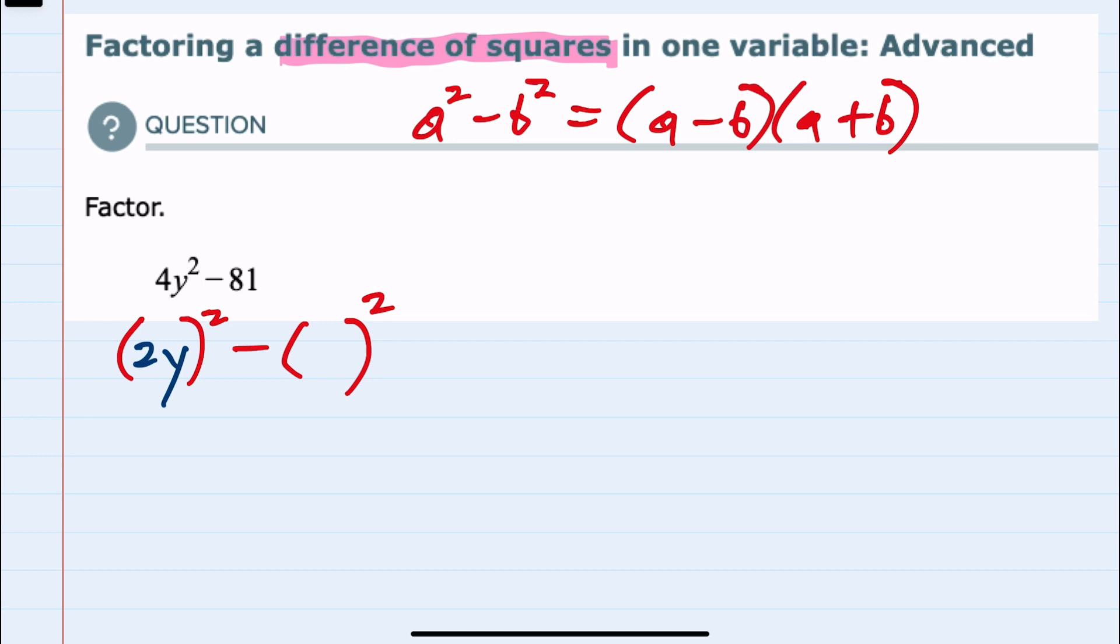And the 81 needs to be written as something squared, that would be 9 squared. So we can now identify our a as 2y and our b as 9 and substitute those in to factor.